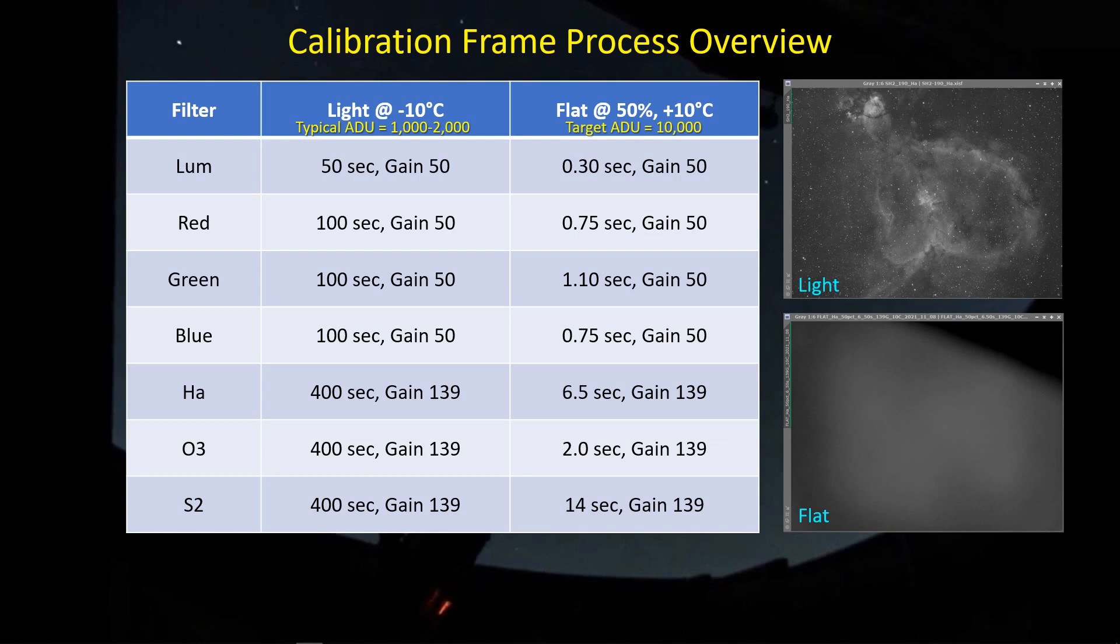And then for the narrow band filters, I use 400 seconds at a gain of 139. And then of course I need to have darks that correspond to each one of these unique configurations. So that gives me three master dark files that I use in calibrating each filter that I use in taking lights.